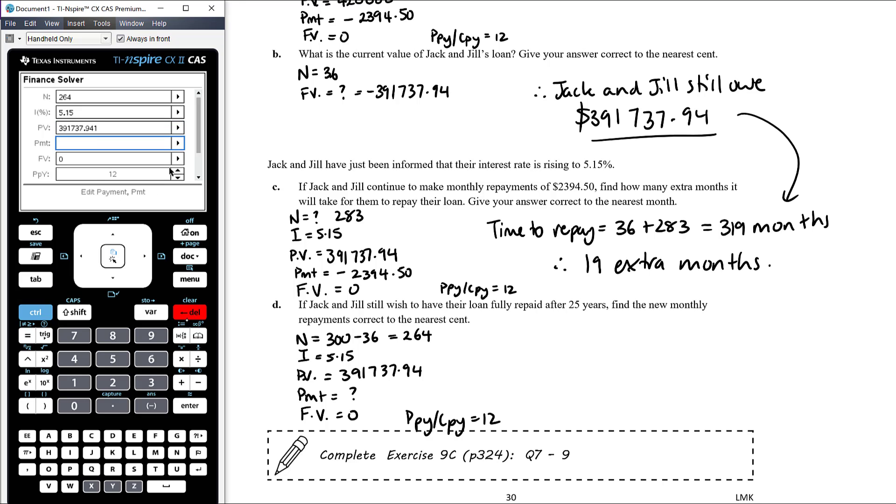Okay, so payments unknown, payments what we want to work out, everything else we have correct in the finance solver. So pressing enter here gives us negative 2482.76 and so therefore the new payment, the new monthly payment is going to need to be $2,482.76. So if they still want to pay it off in a total of 25 years, when the interest rate rises to 5.15%, they will need to increase their payments to $2,482.76.